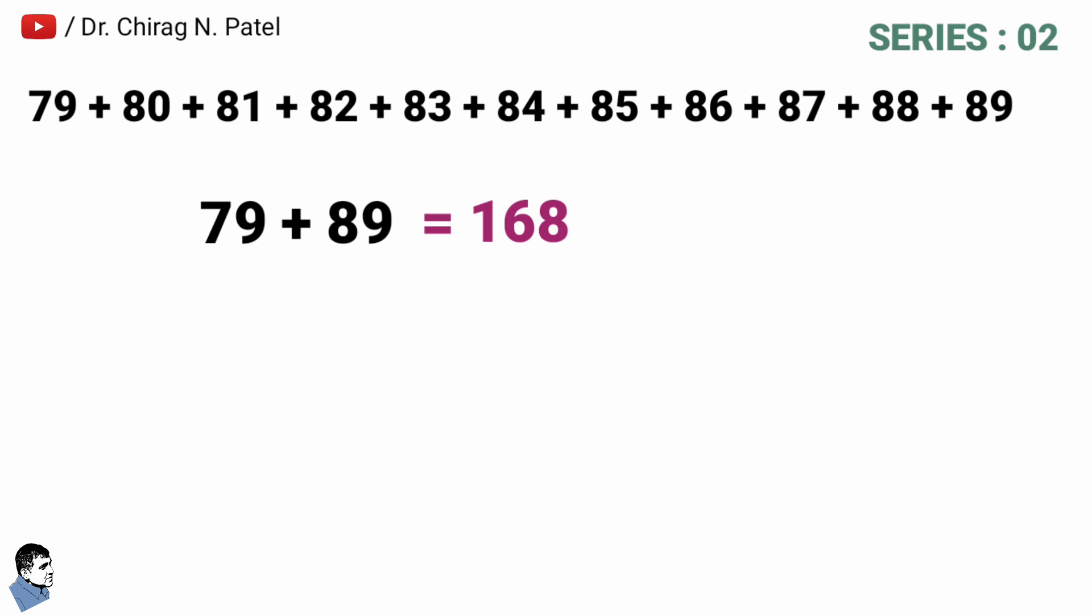After that, multiplying the previous number 168 with amount of number in given series, and that is 11. So 168 multiply with 11 is equal to 1848. At last divide the previous answer by digit 2. So 1848 ÷ 2 is equal to 924, and that's the final answer.